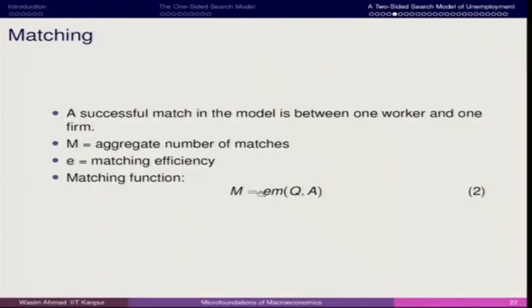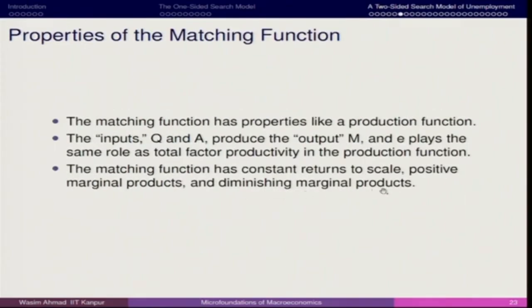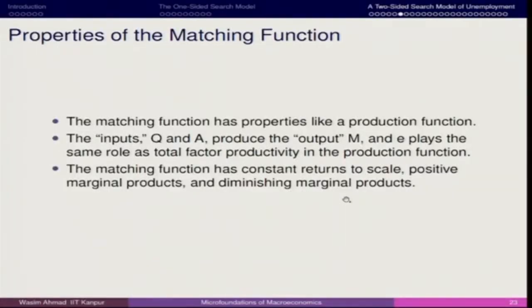If one firm increases and one individual increases, it also leads to an increase by the same amount in M — this is what we call constant returns to scale. Positive marginal product means further additions have a positive effect: if you hire one more person output increases, but it also has a diminishing scenario, since after some point you cannot go for infinite hiring — from the productivity point of view we assume diminishing marginal products.